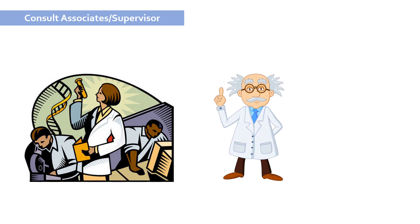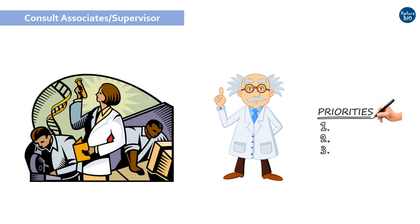You may also consult your associates or supervisor about journals that publish content similar to your work. Make a priority-wise list of a few journals that publish research suitable for your work. This way, if one journal returns your paper, you know which one to target next. It will save a lot of time.